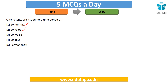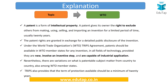The last question: patents are issued for a time period of — is it 20 months, 20 years, 20 weeks, 20 days, or is there no time limit? The correct answer is 20 years. A patent is a form of intellectual property, and it gives its owner the right to exclude others from making, using, selling, or importing an invention for a limited period of time — usually 20 years.